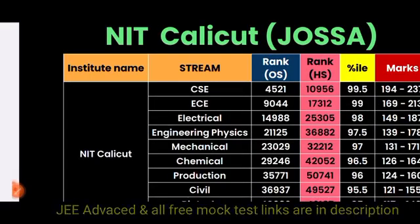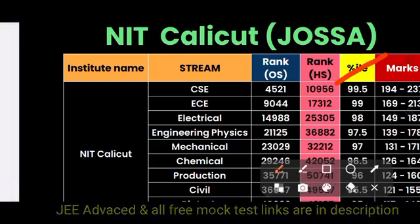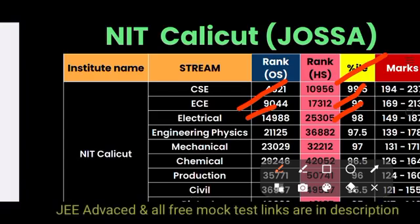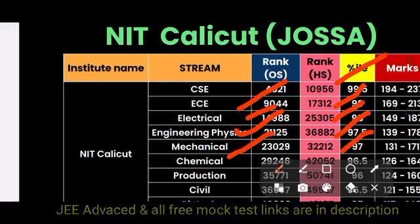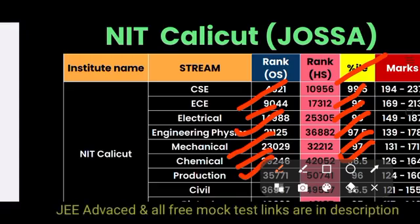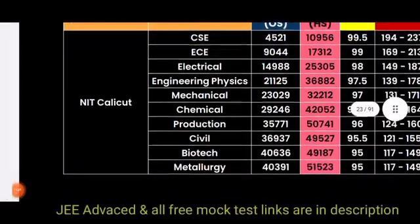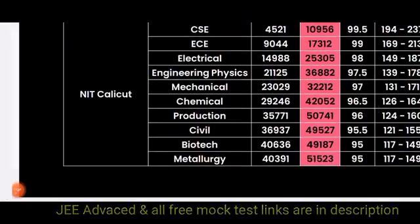For NIT Calicut through JOSA, Computer Science is 4,521 for other state and 10,956 for home state. ECE is 9,044 for other state and 17,312 for home state. Electrical is 14,988 for other state and 25,000 for home state. Engineering Physics is 21,000 for other state and 36,000 for home state. Mechanical is 23,000 for other state and 32,000 for home state. Chemical is 29,000 for other state and 42,000 for home state. Production is 35,000 for other state and 50,000 for home state. Civil is 36,000 for other state and 49,000 for home state. Biotech is 40,000 for other state and 49,000 for home state.